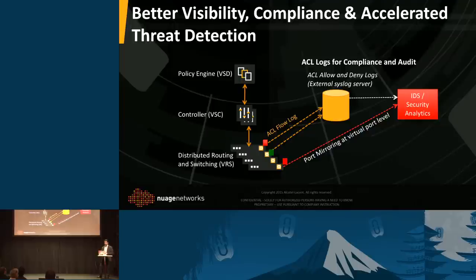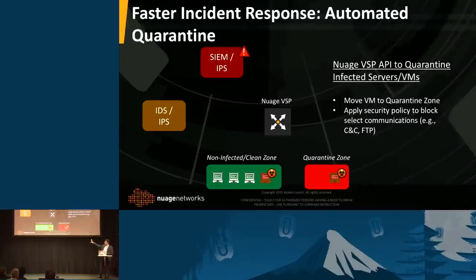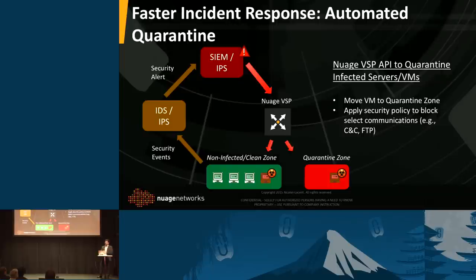We'll show examples with the demos later on how we leverage that feature set to help secure the data center. Once you detect a violation to your ACL rule, you can actually take action to quarantine a workload. For example, you have an allow-all policy group with VMs. Once a VM gets infected, an intrusion prevention and detection system can monitor that, detect that activity, and then trigger a call to VSD to move that workload automatically — without user intervention — to a more secure policy group.